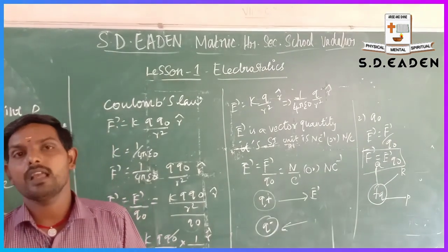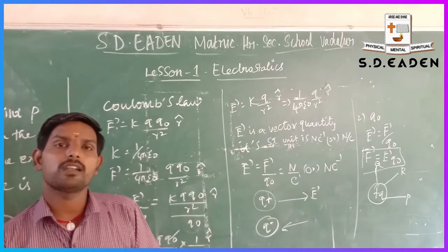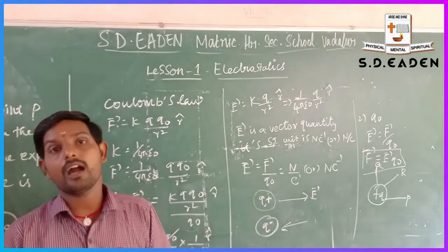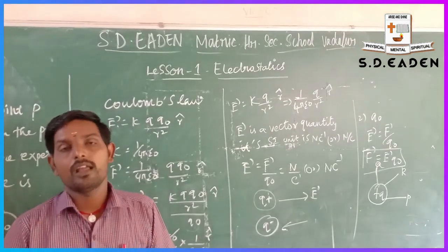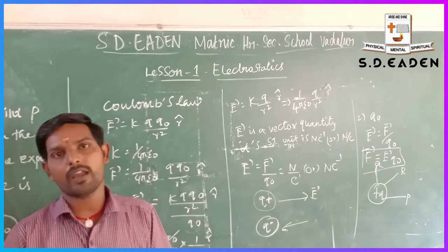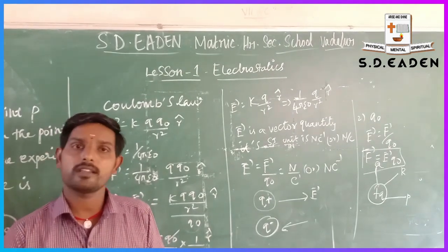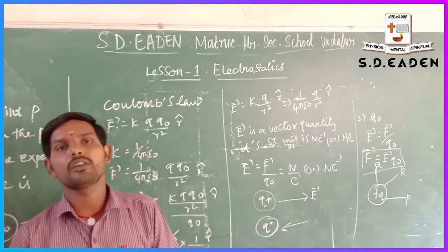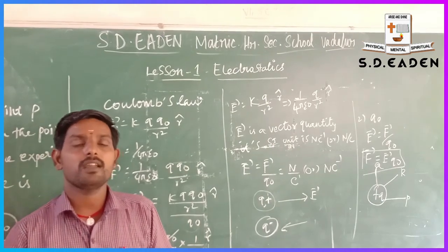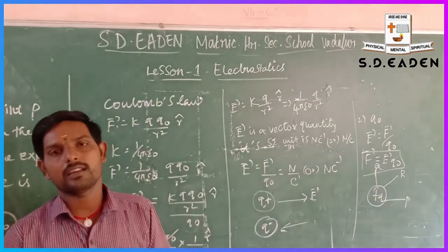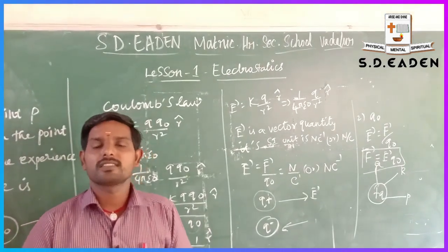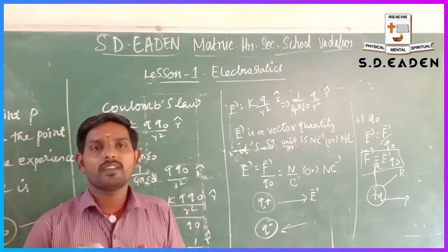The seventh aspect: there are two kinds of electric field — uniform electric field and non-uniform electric field. Uniform electric field has the same direction and constant magnitude. Non-uniform electric field has different directions and different magnitudes. These are the seven important aspects of electric field.